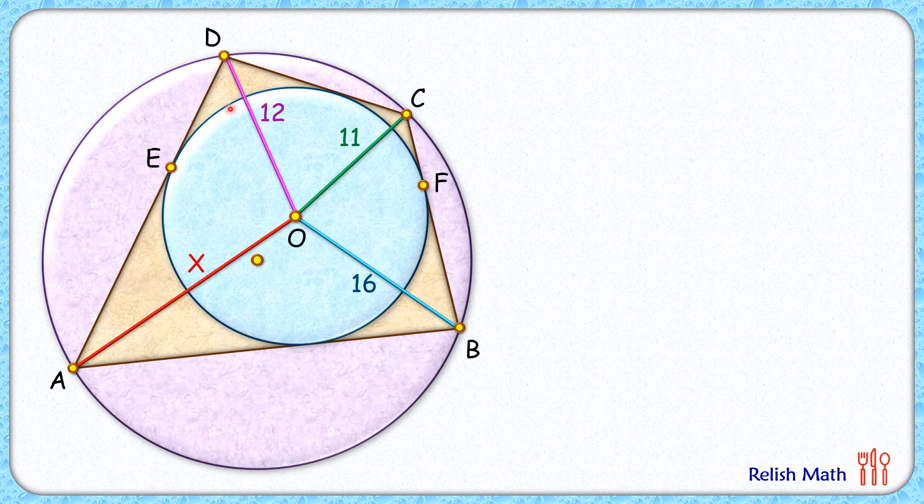Now if we check triangle BFO, this angle is 90° - α, this is 90°, and thus this remaining angle will be α degrees. Thus triangle DEO is similar to triangle OFB by angle-angle similarity. As the triangles are similar, the ratio of corresponding sides will be equal. So we can say that EO/DO = FB/OB.